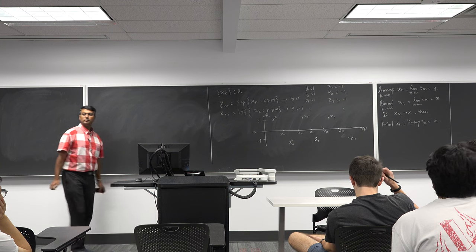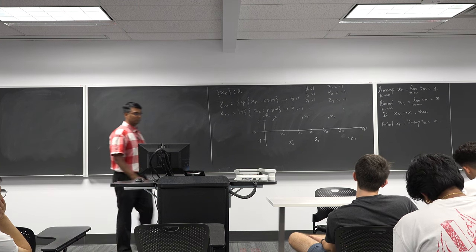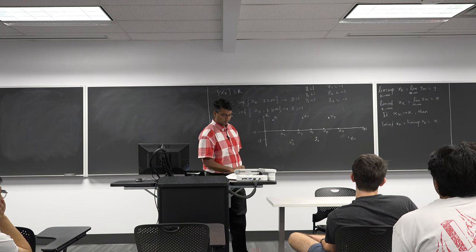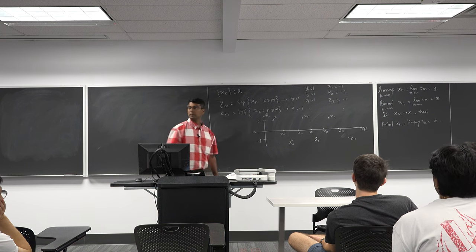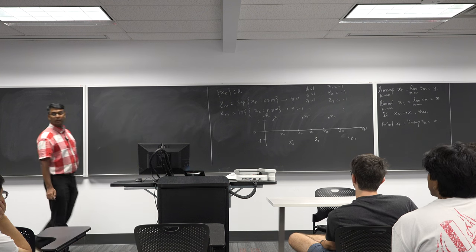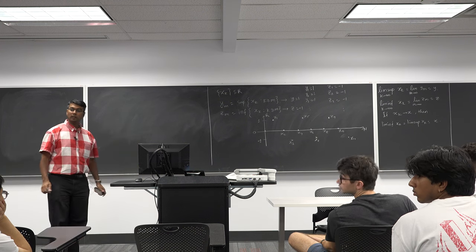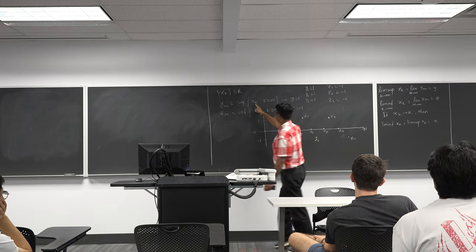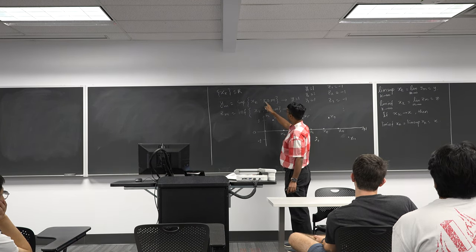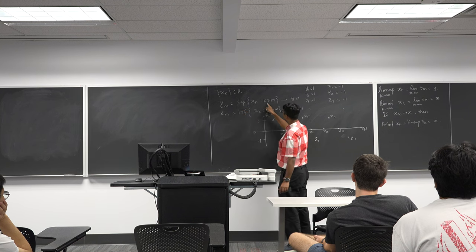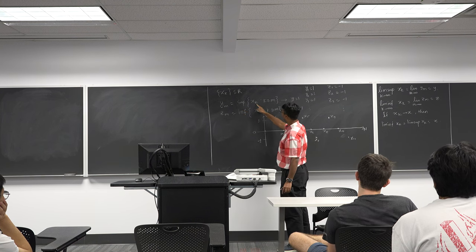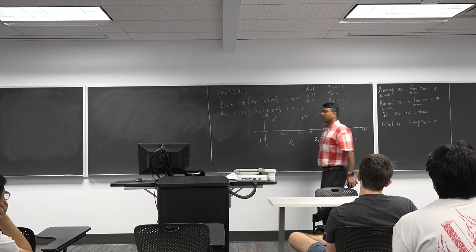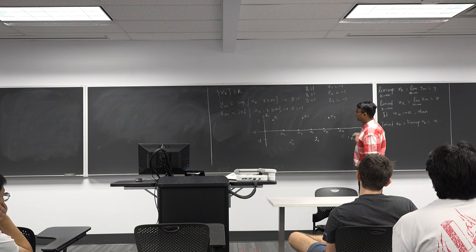K has to be greater than M. We are looking at the tail of the sequence xk — we pick an M, look at all xk such that k is greater than or equal to M, and take the maximum value of that tail.